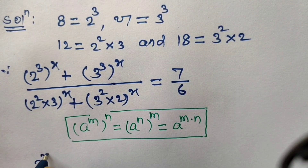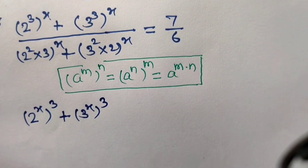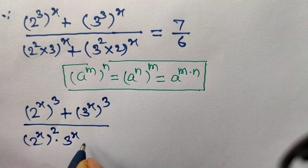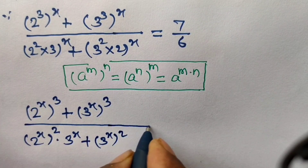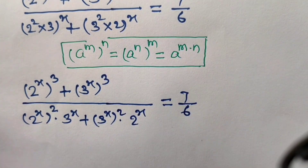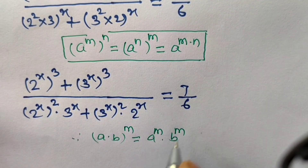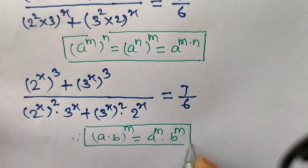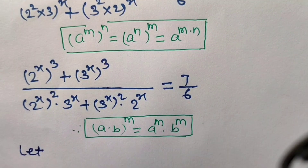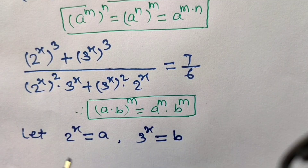Applying this law of indices on the left-hand side, this can be written as 2 to the power x, to the power 3, plus 3 to the power x, to the power 3, divided by 2 to the power x, to the power 2, into 3 to the power x, plus 3 to the power x, to the power 2, into 2 to the power x. We also apply the property that (a·b) to the power m equals a to the power m into b to the power m. Let us assume 2 to the power x equals a and 3 to the power x equals b.